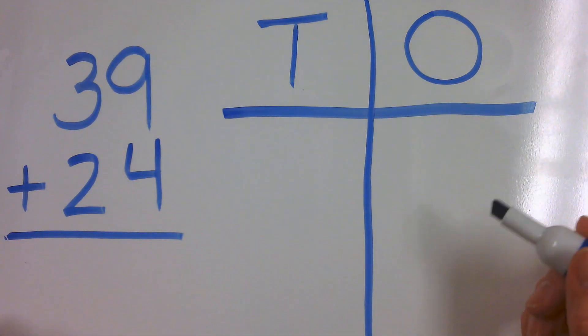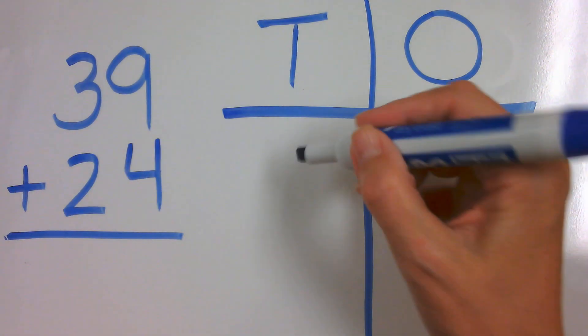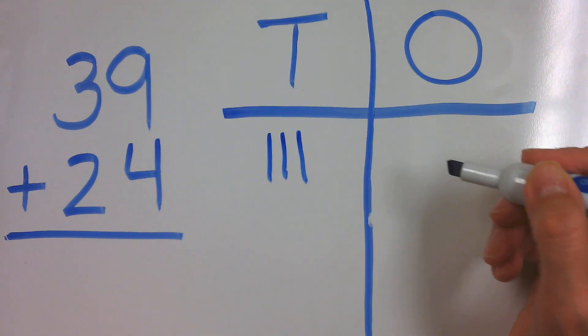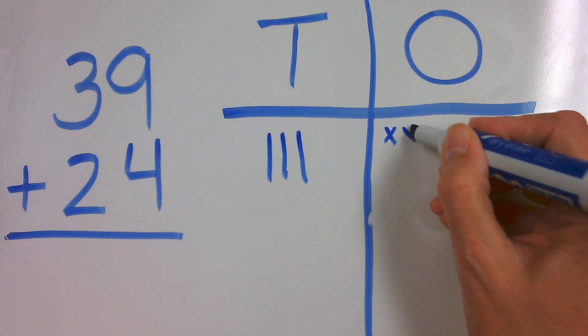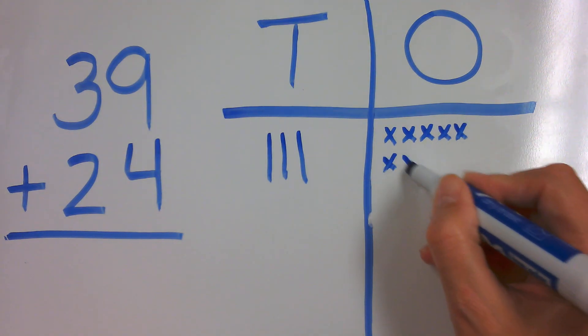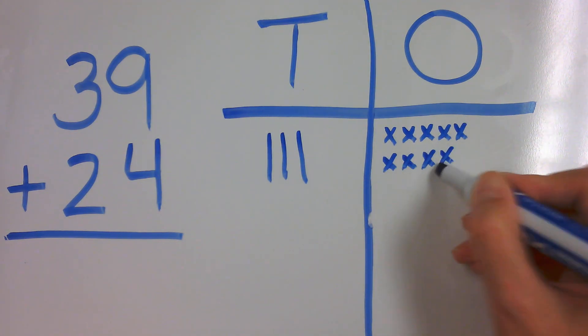The first number I'm going to draw is 39. So that is three tens and nine ones. One, two, three, four, five, six, seven, eight, nine.